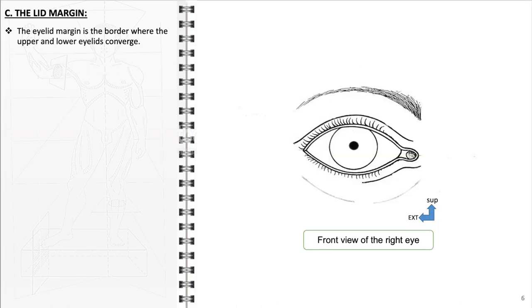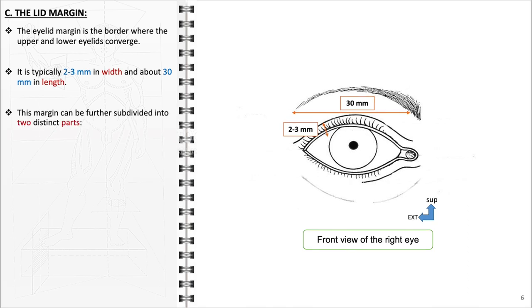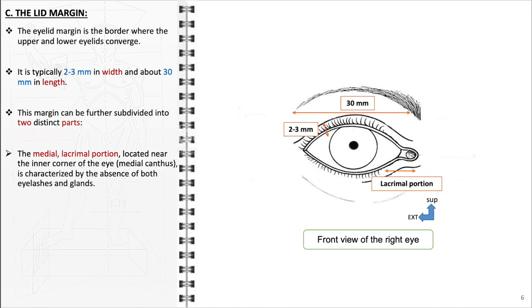The eyelid margin represents a critical anatomical feature where the upper and lower eyelids converge. It is a narrow strip, typically measuring 2 to 3 mm in width and about 30 mm in length. The eyelid margin can be subdivided into two distinct sections. The medial lacrymal portion is located near the inner corner of the eye, the medial canthus, and is devoid of eyelashes and glands. It is closely associated with the lacrymal system, including the lacrymal glands and ducts responsible for tear production and drainage.